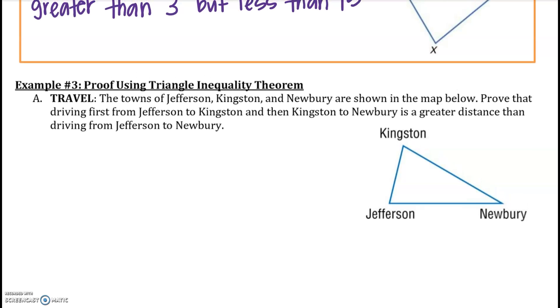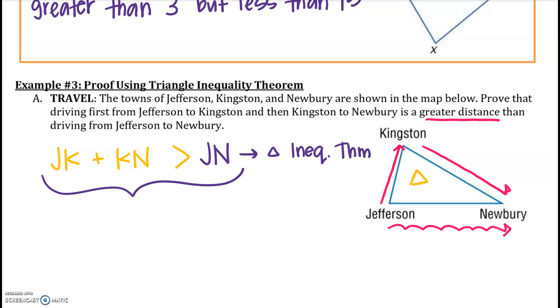And then the last example. The towns of Jefferson, Kingston, and Newberry are shown in the map below. Prove that driving first from Jefferson to Kingston, and Kingston to Newberry is a greater distance than driving from Jefferson to Newberry. Well, I know that because those three towns create a triangle, Jefferson to Kingston plus Kingston to Newberry must be greater than my third side, which is Jefferson to Newberry. So because of that triangle inequality theorem, that proves that this must be true.